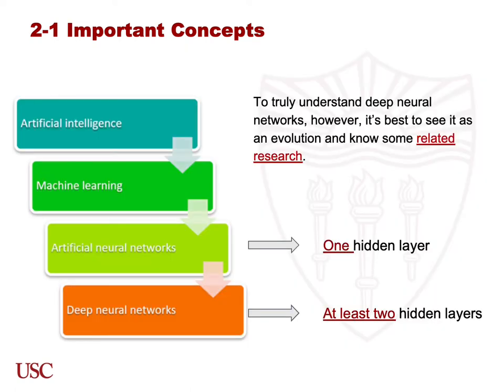To fully understand the importance and concept of DNN, I will explain its evolution and some related research. At the beginning, we only had artificial intelligence. Then machine learning came out and got developed. After that, we got artificial neural networks, and today we have deep neural networks. The biggest difference between ANNs and DNNs is that ANNs only use one hidden layer, but DNNs must include at least two hidden layers.